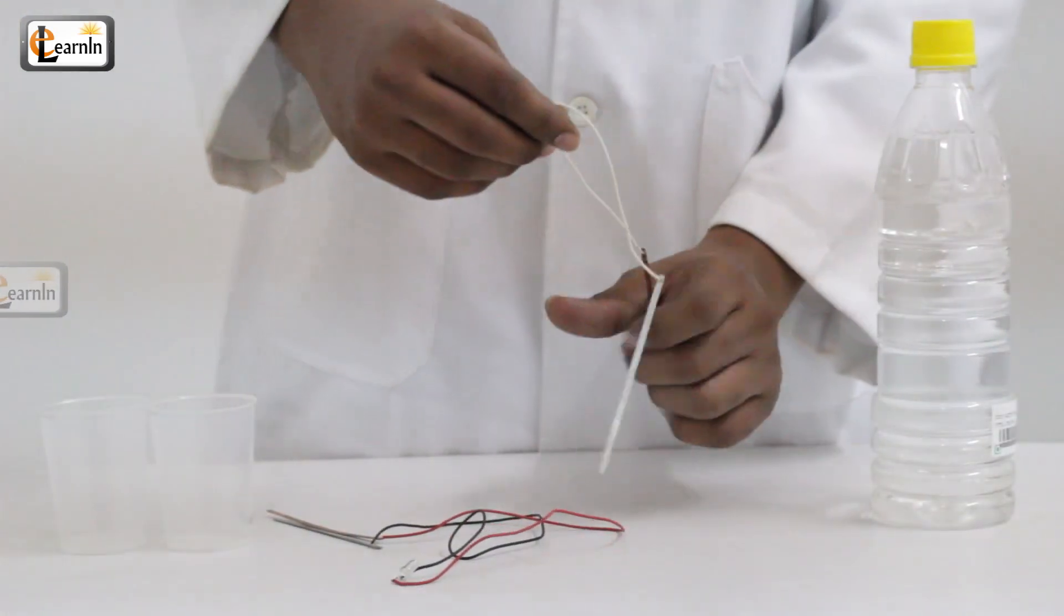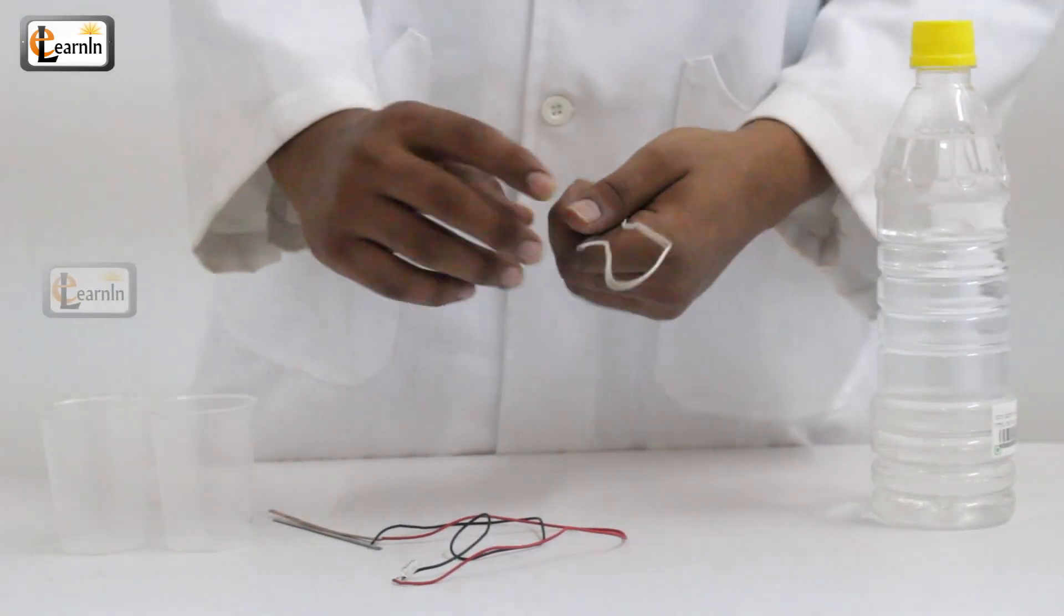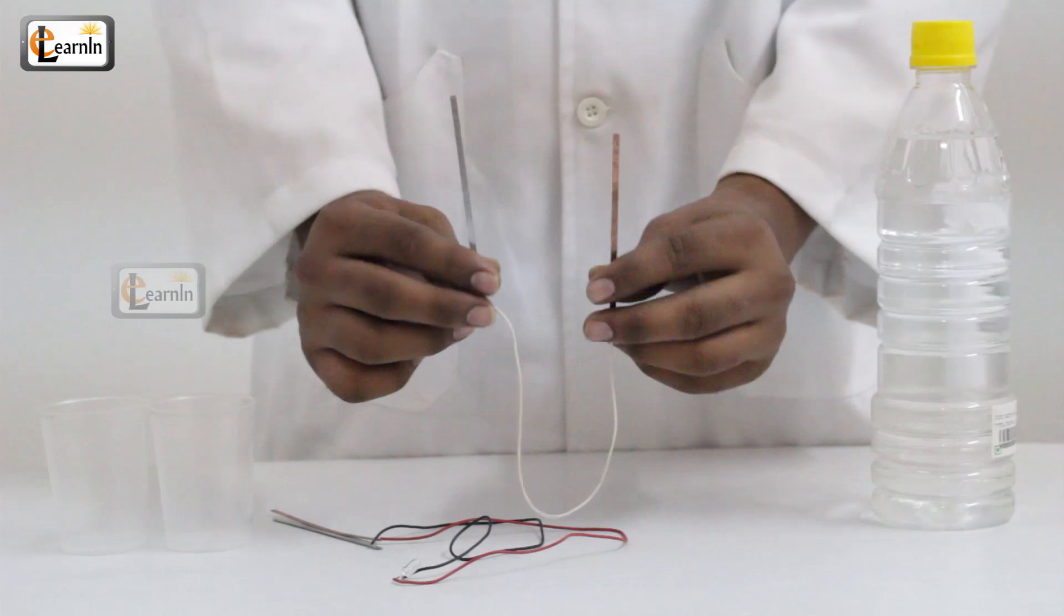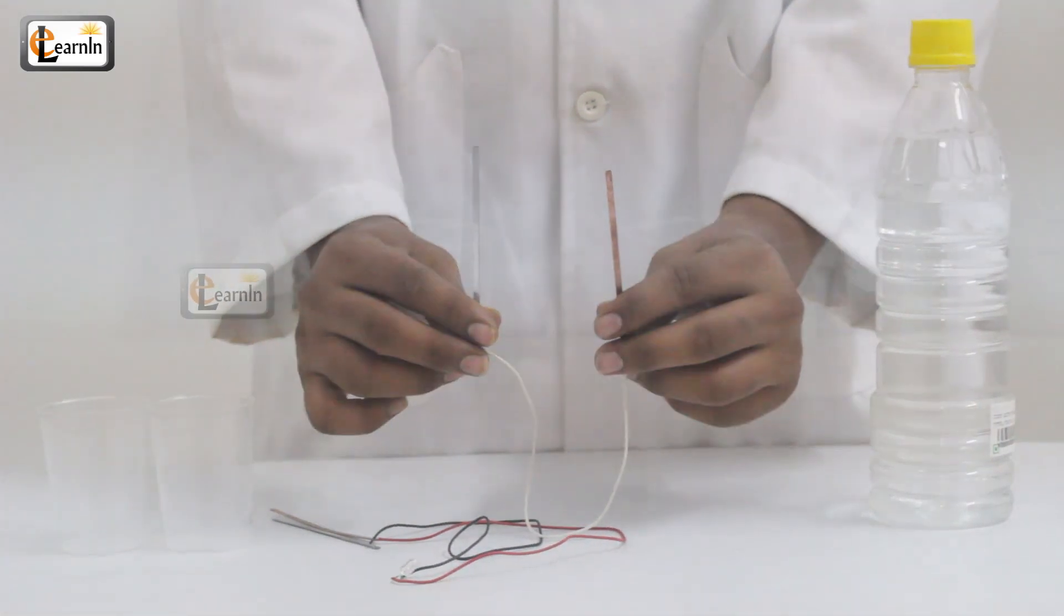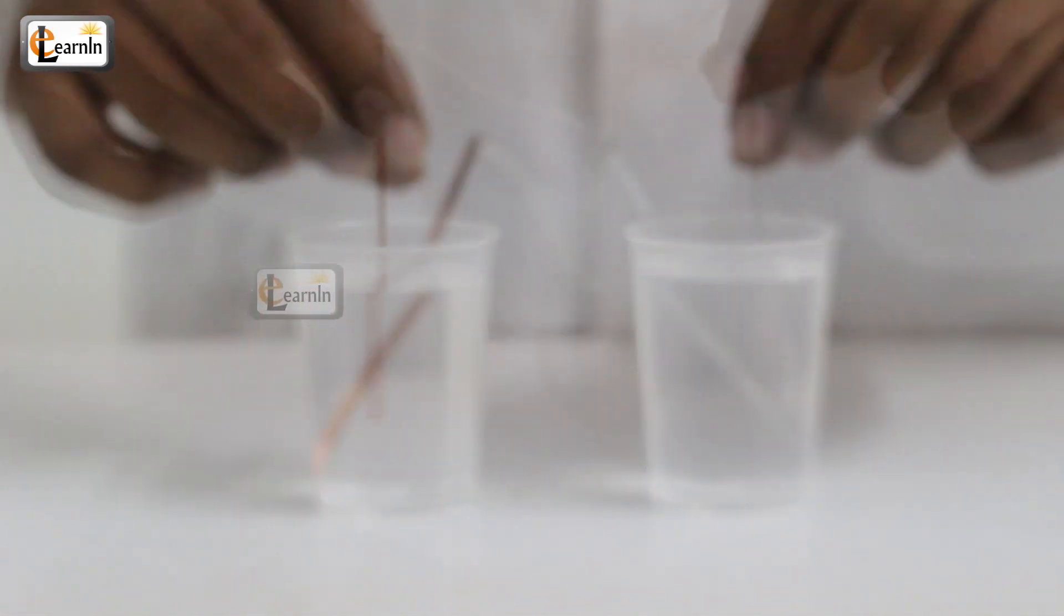Take the zinc and copper strip and connect one of the ends of both strips using a connecting wire. Put the connected zinc strip in one of the glasses.